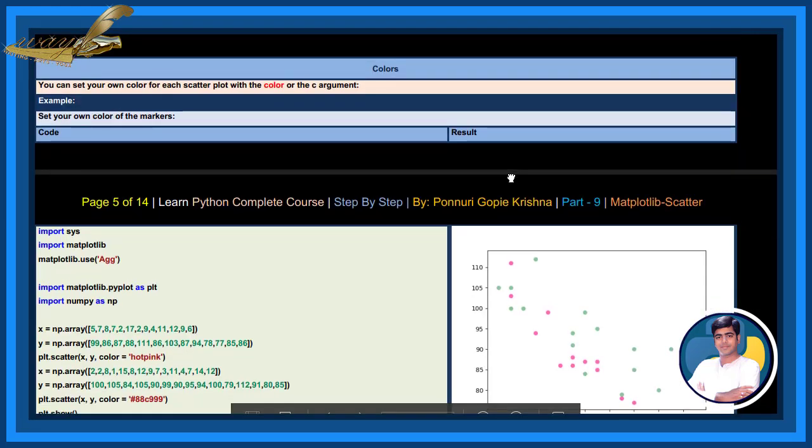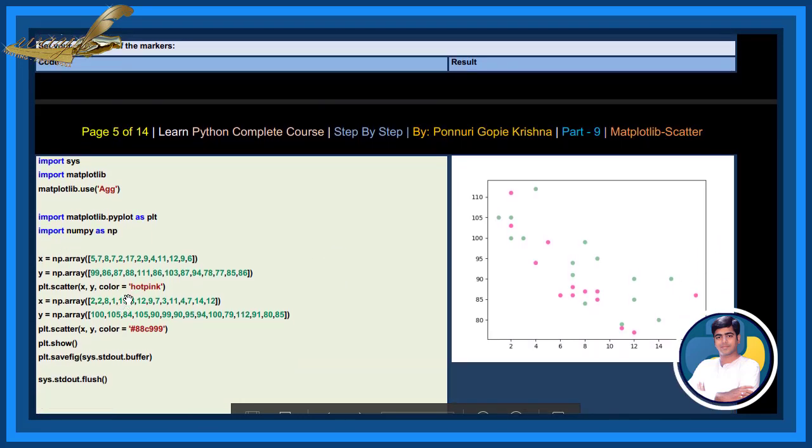Colors. You can set your own color for each scatter plot with the color or the C argument. See the example. Set your own color of the markers. Here we have given the name hot pink and we are giving the code 88c9199, hex value. See here the pink and green.